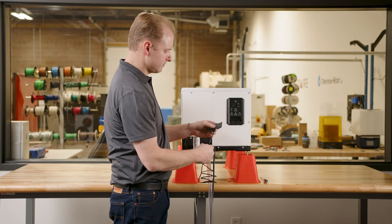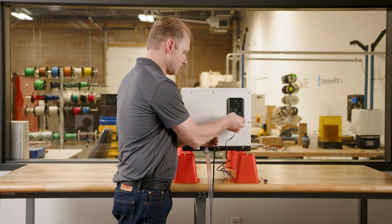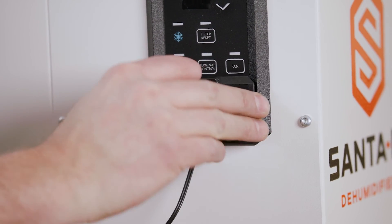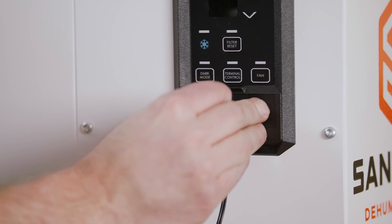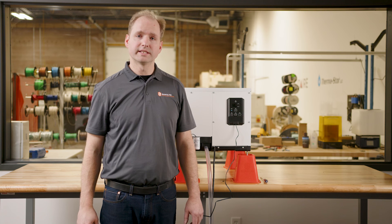Once those wires are secured, we're going to route the wire out of the bottom. Then reinstall the terminal block. After the terminal block is reinstalled, the installation is complete.